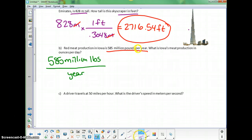Often times we don't even write the division line, but when I do have a unit that's in the denominator per year, I better make sure I write it in the appropriate place. What do we want to do? Find what Iowa's meat production is in ounces per day.